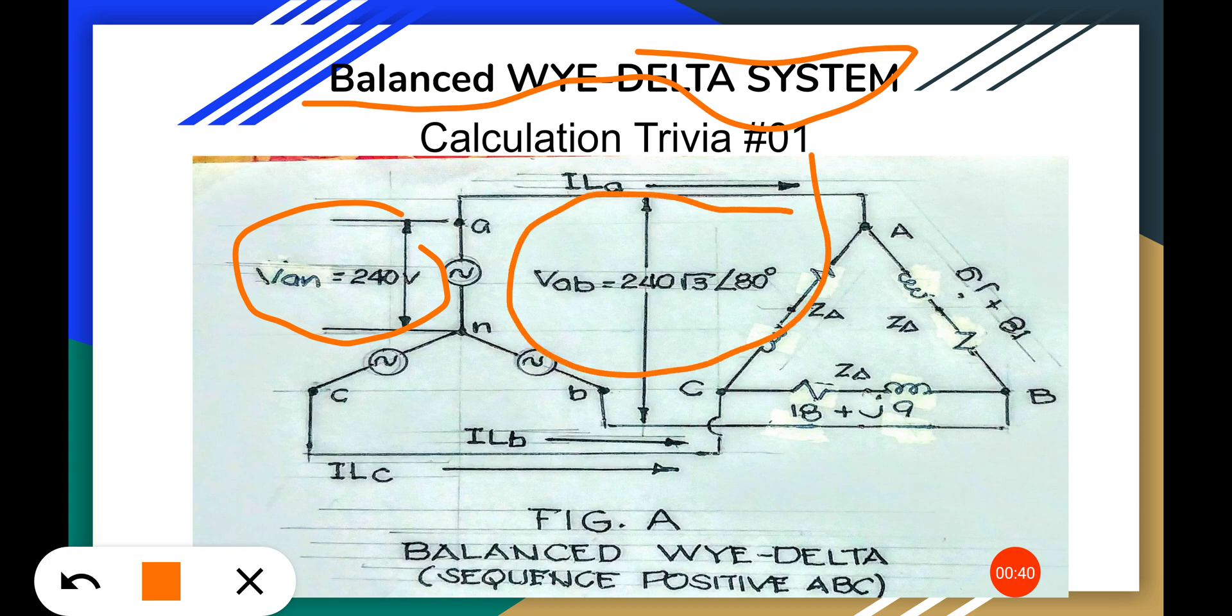We also have this delta load impedance which is 18 plus j, an inductive load, and it's balanced with all three phases having the same load impedance.